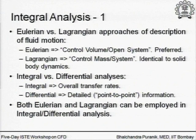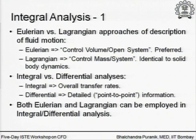In the Eulerian approach, we decide on a region of space that we want to separate out, which we call either a control volume or, from thermodynamics, an open system. So a control volume or open system approach is the Eulerian approach, and it is preferred in fluid mechanics. On the other hand, you can use a Lagrangian approach, which in fluid mechanics terminology is called the control mass approach, or in thermodynamics terminology, the system approach.